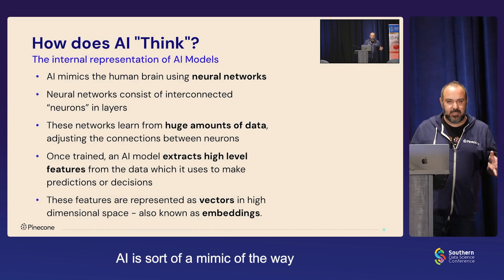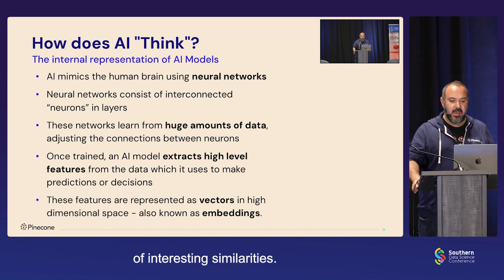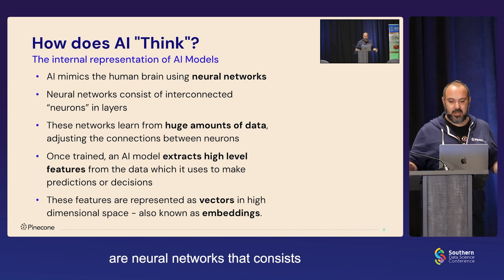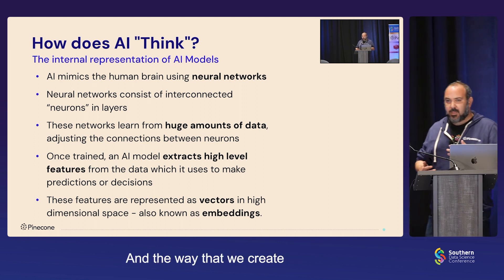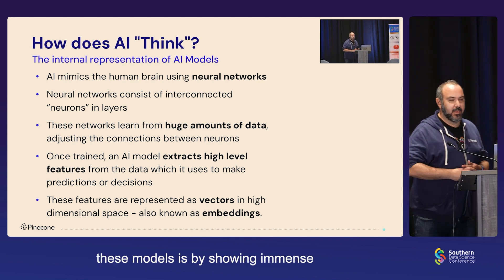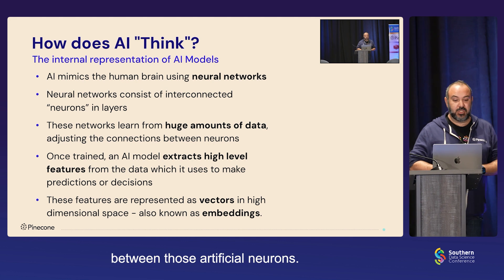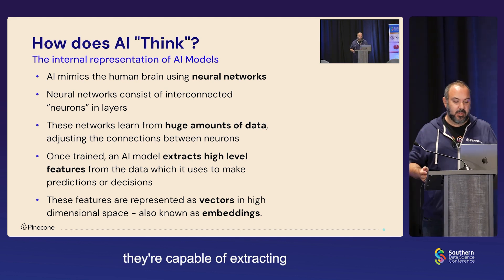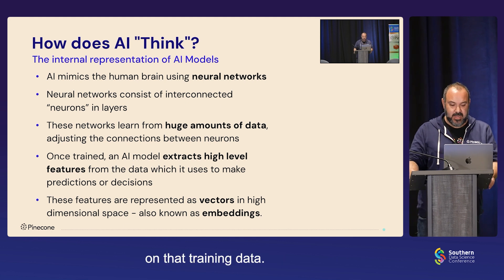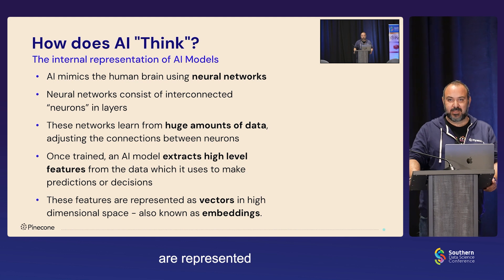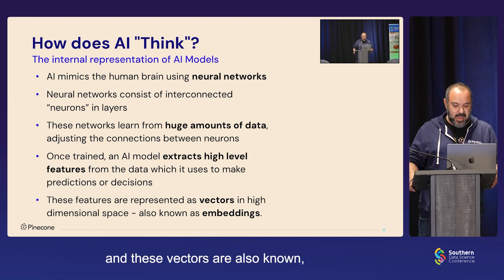AI is sort of a mimic of the way that human beings think — obviously not the same, but there are a lot of interesting similarities. A lot of these models are neural networks consisting of layers of interconnected artificial neurons. We create these models by showing immense amounts of data to these networks, which then adjust the connections between those artificial neurons. Once trained, they extract high-level features and make decisions based on that training data. Those features are represented internally as vectors in high-dimensional space — very long lists of numbers.